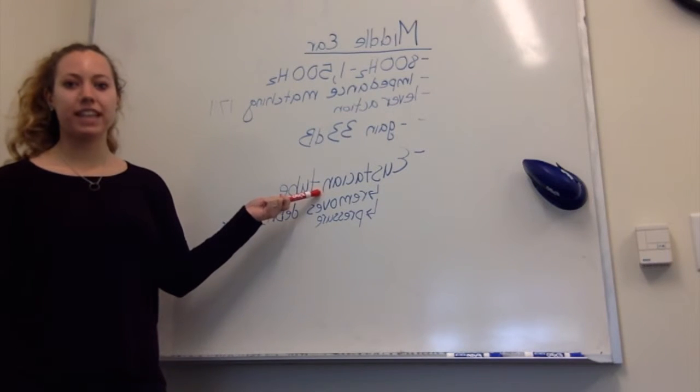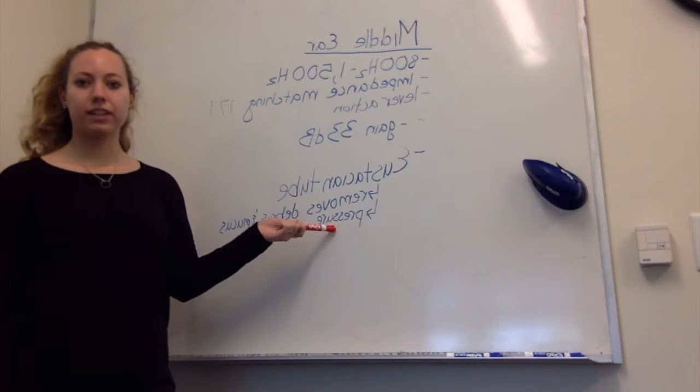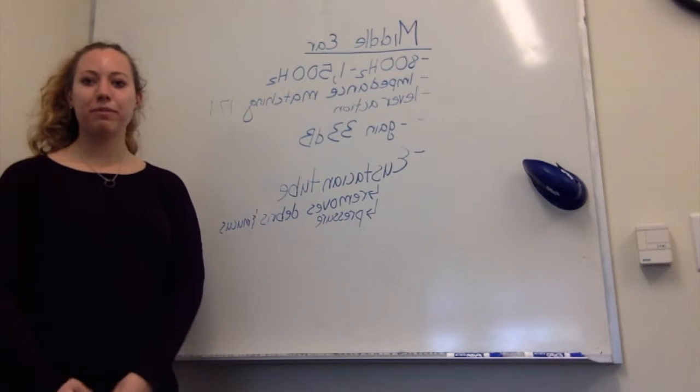The eustachian tube is the end of the middle ear, and it helps remove debris and mucus, and it also equalizes pressure in the ear, like when you pop your ears.